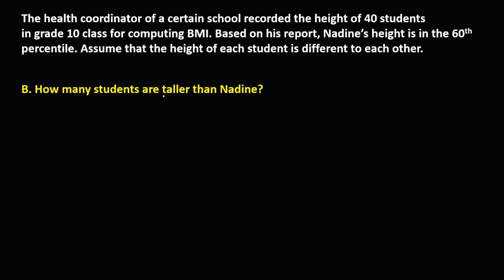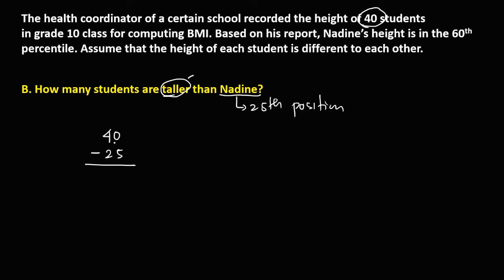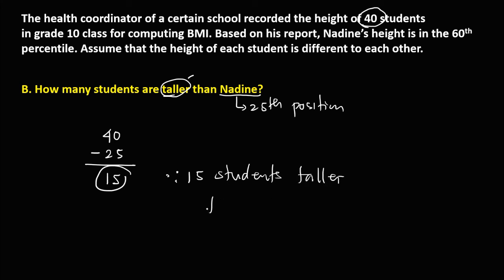Since Nadine is in the 25th position, to find the number of students taller than Nadine, we take the total 40 students and subtract Nadine's position: 40 minus 25 equals 15. Therefore, 15 students are taller than Nadine.